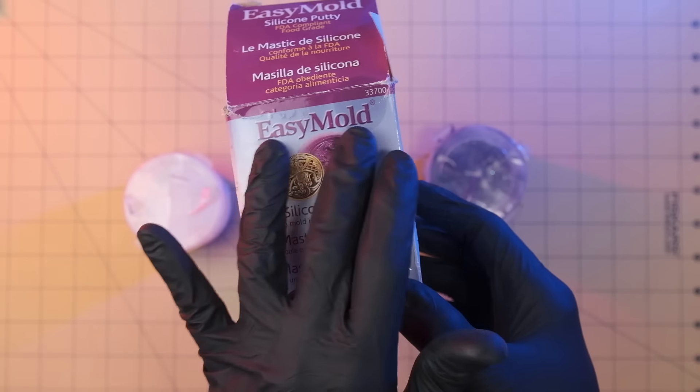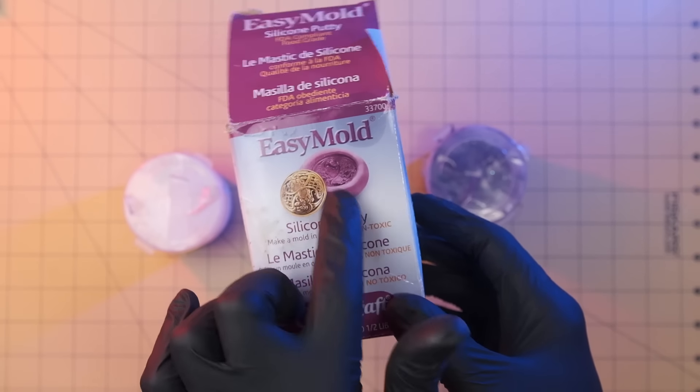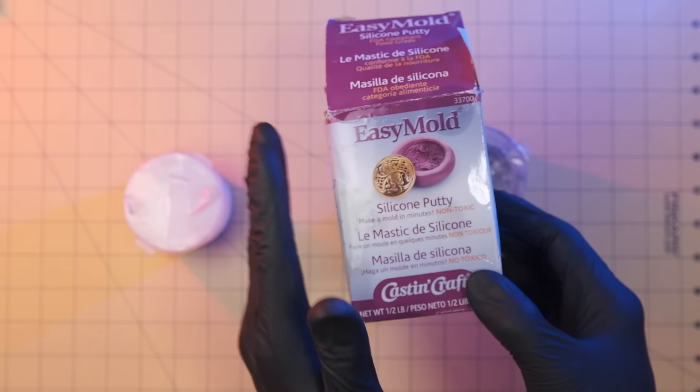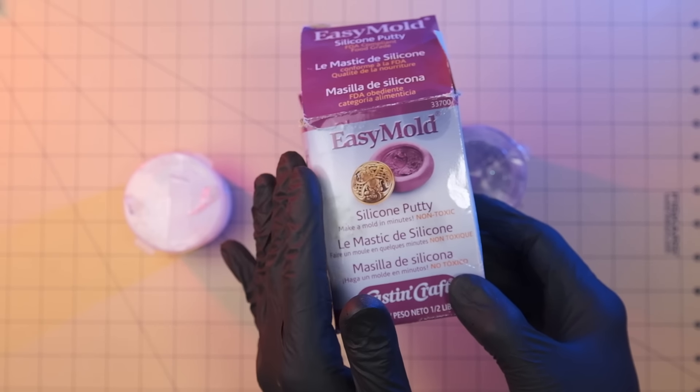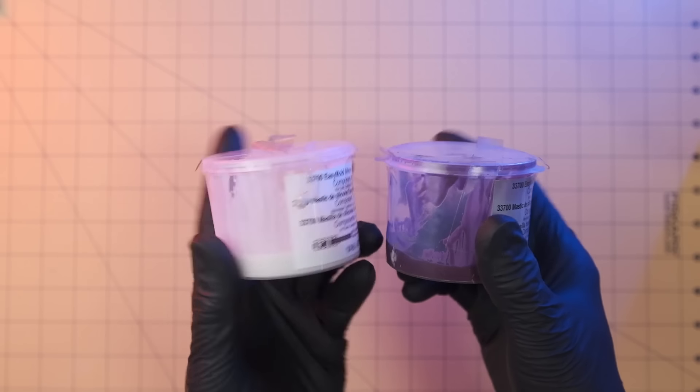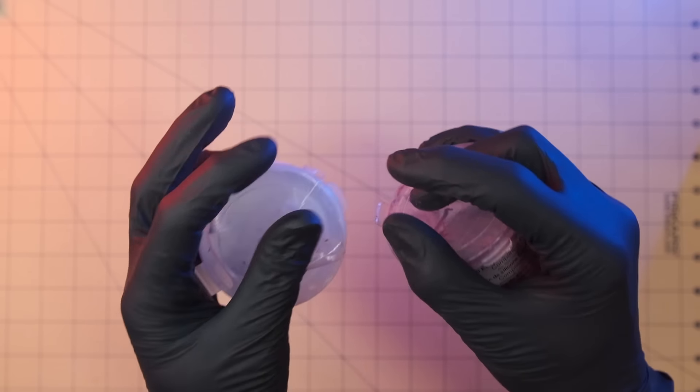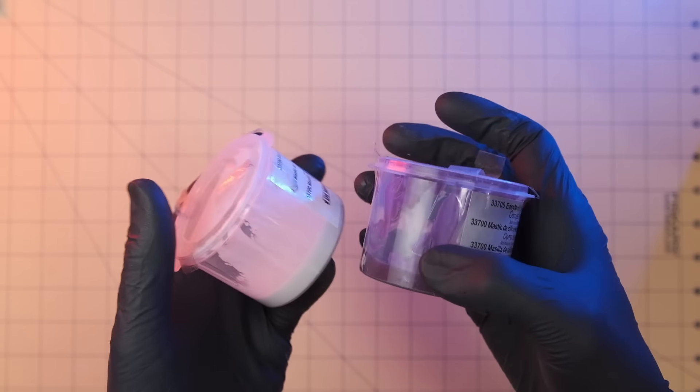I'm going to be using Easy Mold silicone putty. It has a firmness that I think is appropriate for stamps. And it's just a one-to-one A-to-B two-part mixture. So you grab your A-part, you grab your B-part, they're the same size, you mix them up.